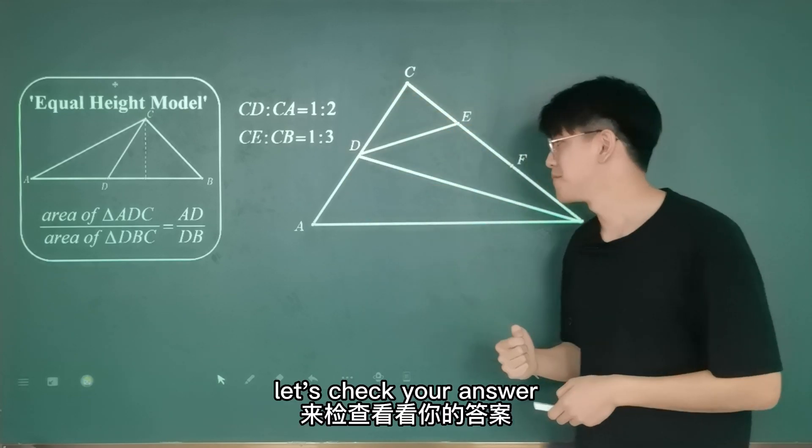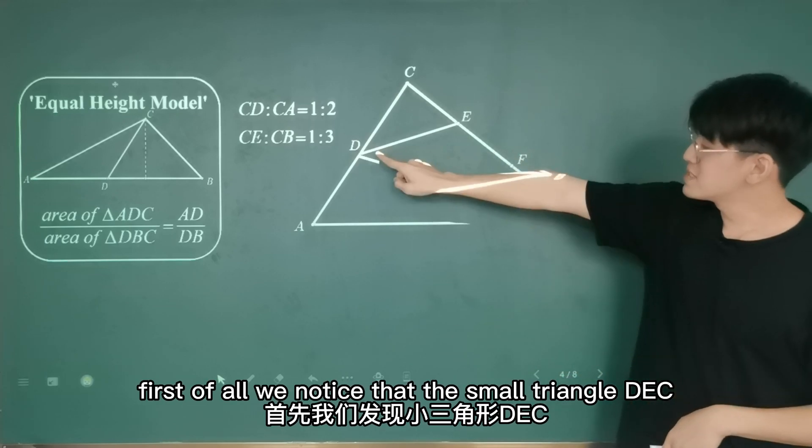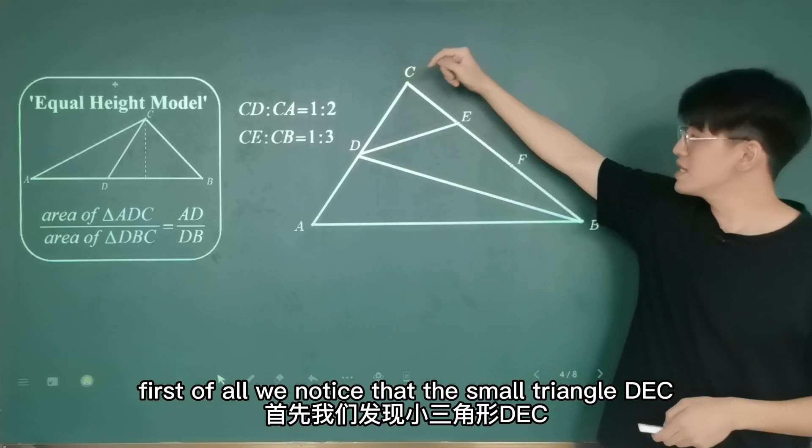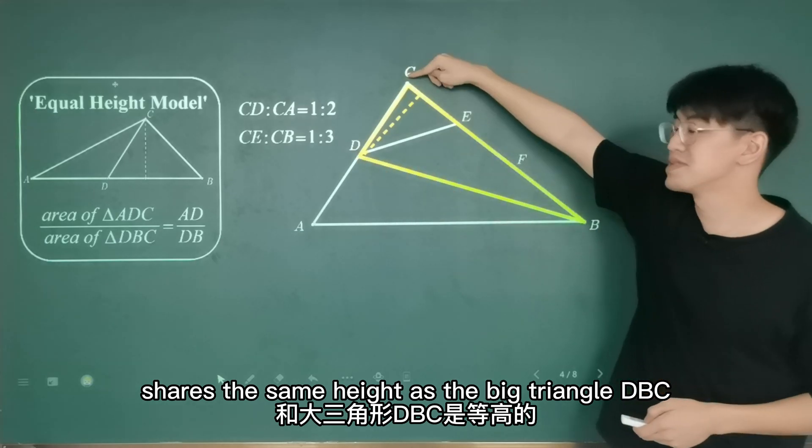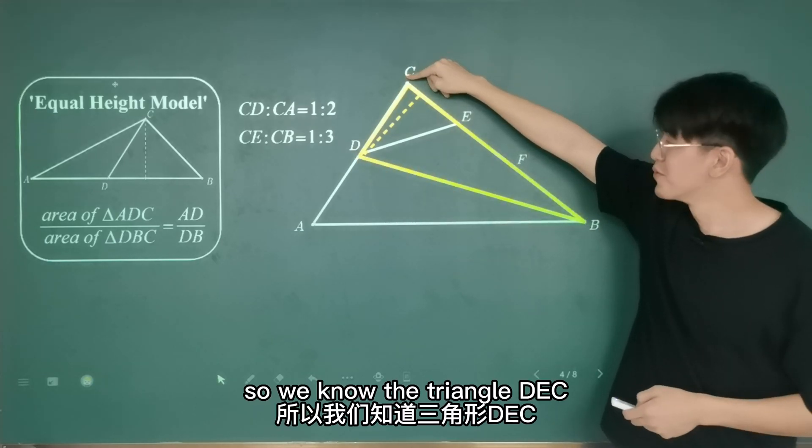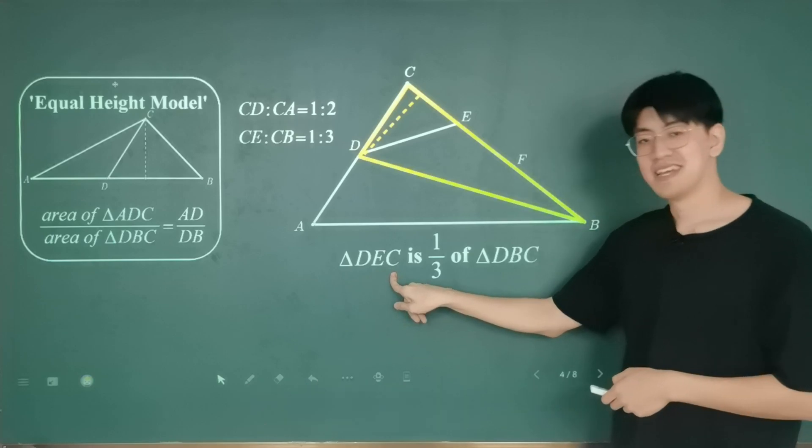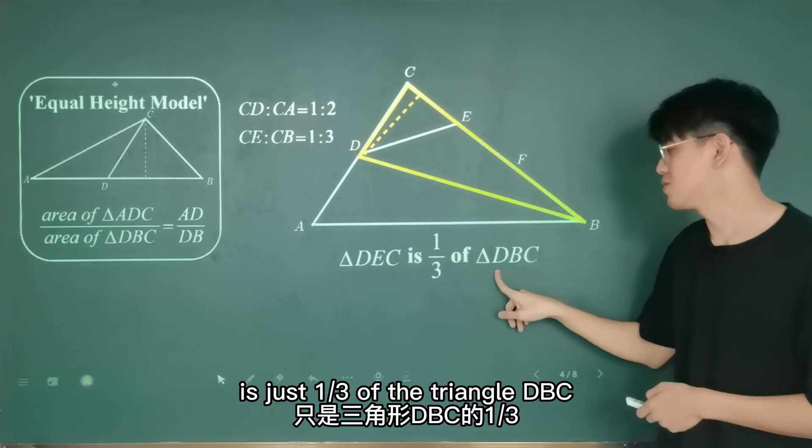Let's check your answer. First of all, we notice that the small triangle DEC shares the same height as the big triangle DBC. So we know triangle DEC is just one-third of triangle DBC.